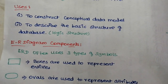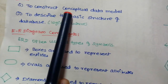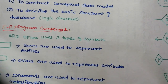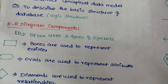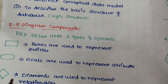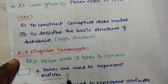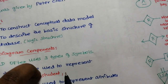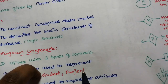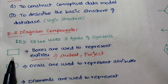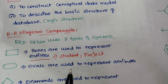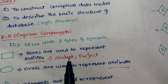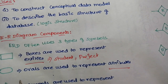There are basically three components: rectangle, oval, and diamond shape. Rectangle boxes are used to represent entities. In the rectangle, entities are represented. Entities — for example, student entity or project entity — are represented using rectangle boxes.